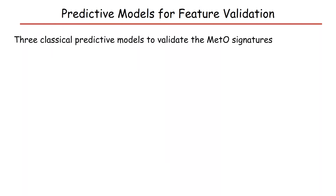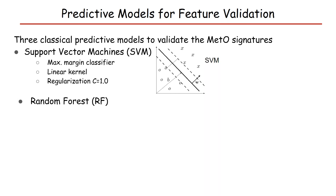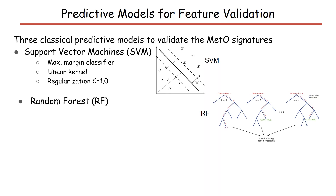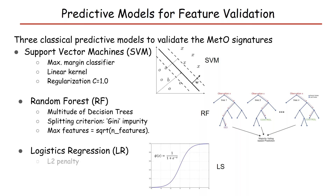For validation, we employ three classical predictive models. The first is support vector machine, a maximum margin classifier, using a linear kernel with regularization parameter set to 1. The second is random forest, which grows a multitude of decision trees to avoid overfitting, using Gini impurity splitting criteria, with maximum features per node set to the square root of the total number of features. We also use logistic regression with L2 penalty and regularization parameter set to 1.